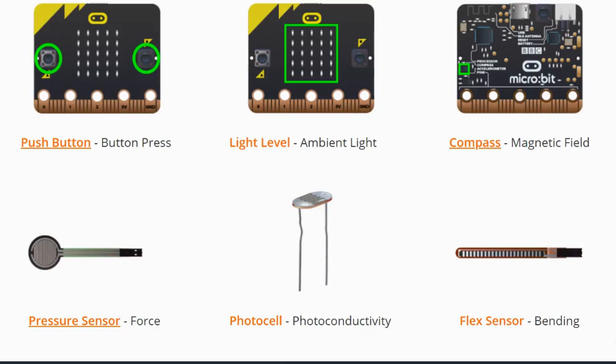This can be used to control different outputs that we will learn about in Activity 2.2. Your pressure sensor is an external sensor that uses force and detects either a digital or analog value in order to trigger output devices. The photocell uses photoconductivity or direct light to trigger an analog value that will cause your output devices to work. The flex sensor is another external device that can be used when bending to trigger an analog value that will then control your output device.